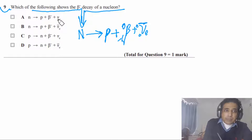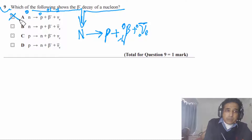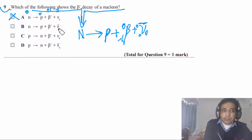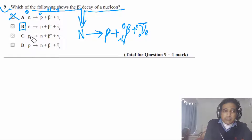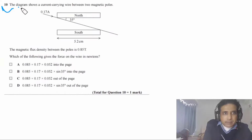Option A has a neutron decaying to a proton but emits an electron neutrino — lepton number is not conserved, since the neutron has zero lepton number. Option B has neutron → proton + electron + electron antineutrino, which correctly conserves lepton number. Options C and D show proton decaying to neutron, which is beta-plus decay. The answer is B.